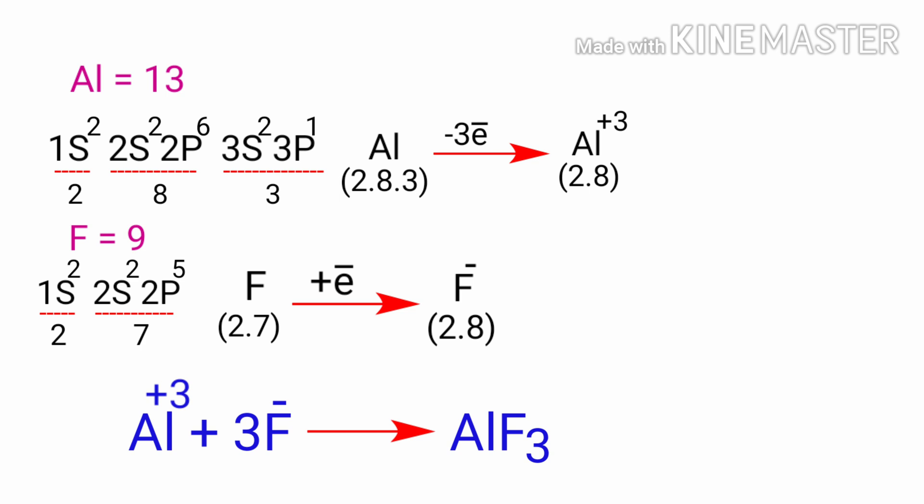In order for an aluminum atom to lose three electrons, it must be in the presence of a suitable receiver like the fluorine atoms.